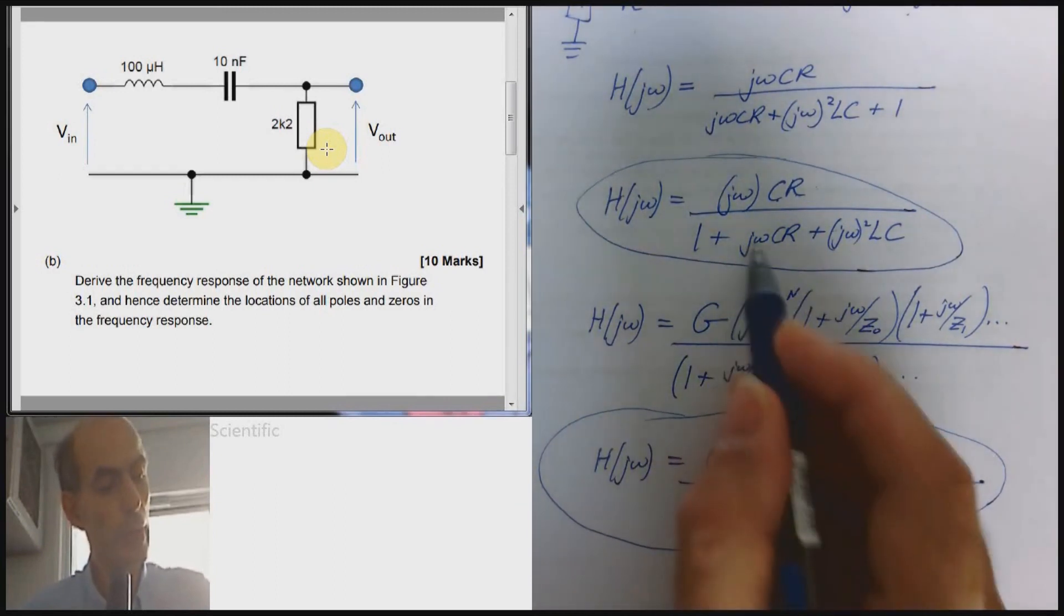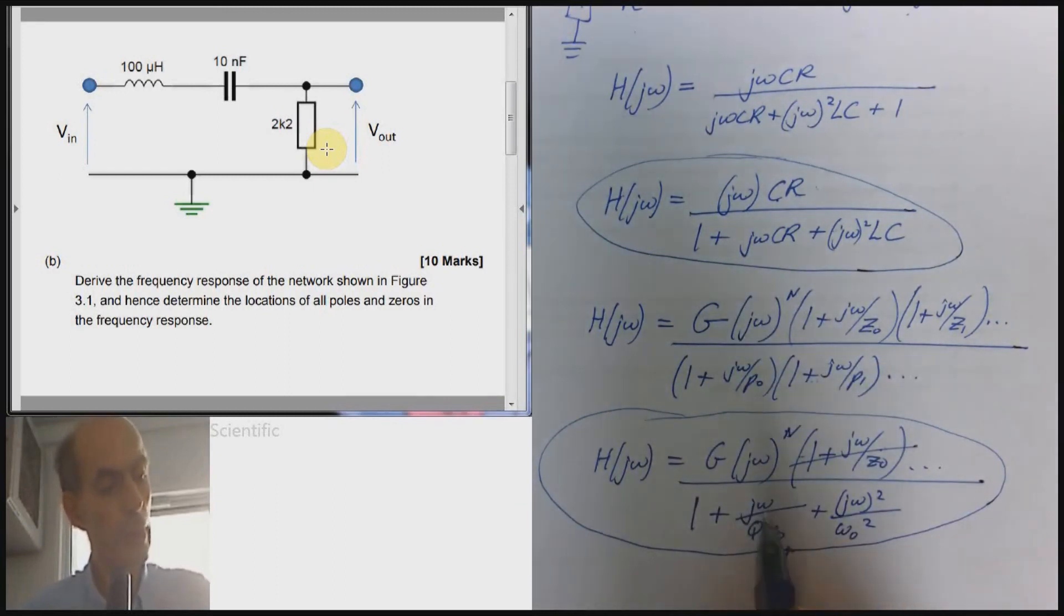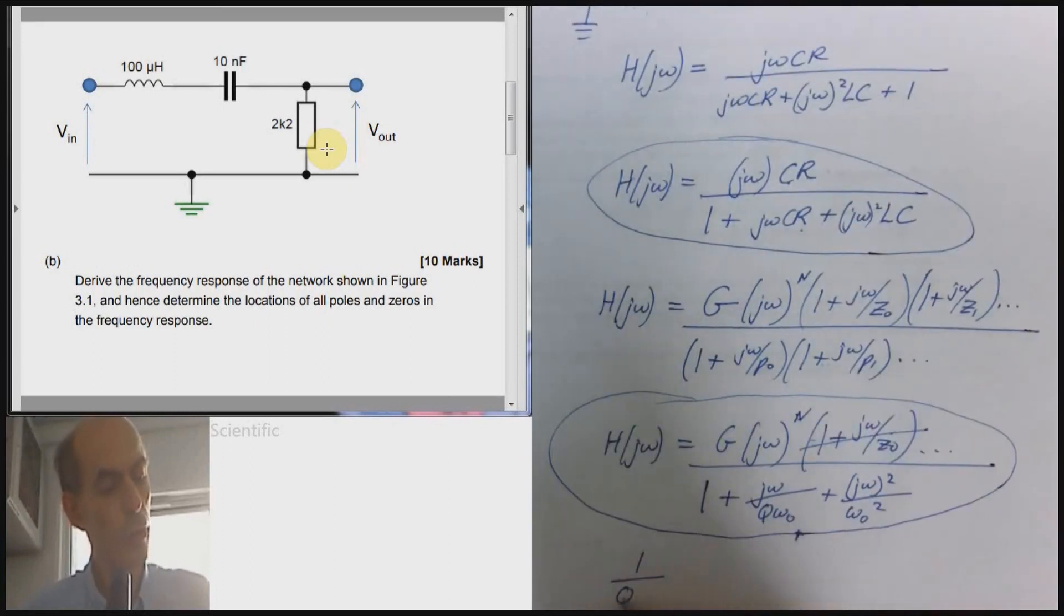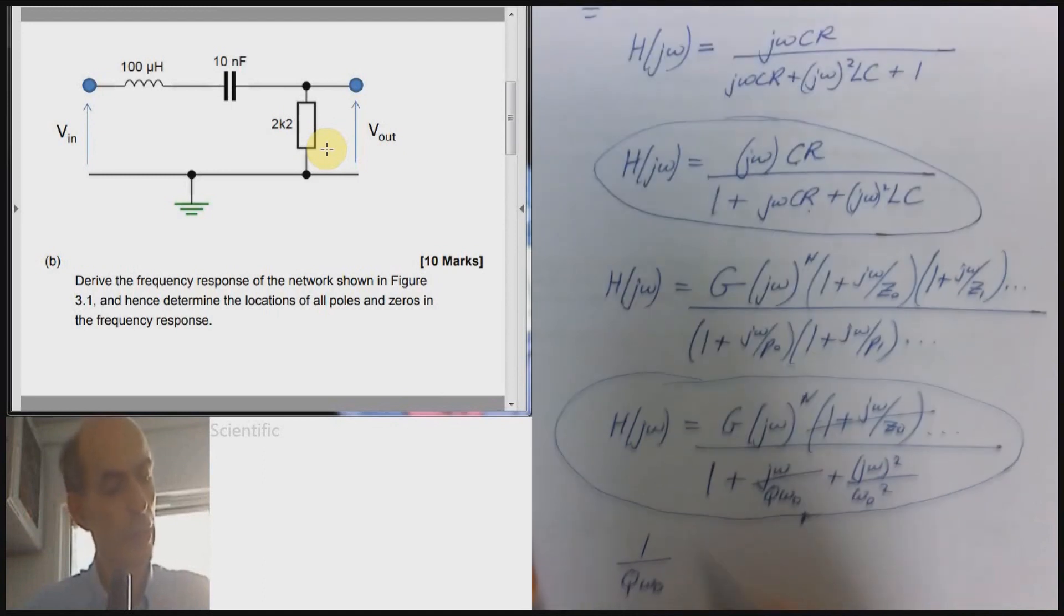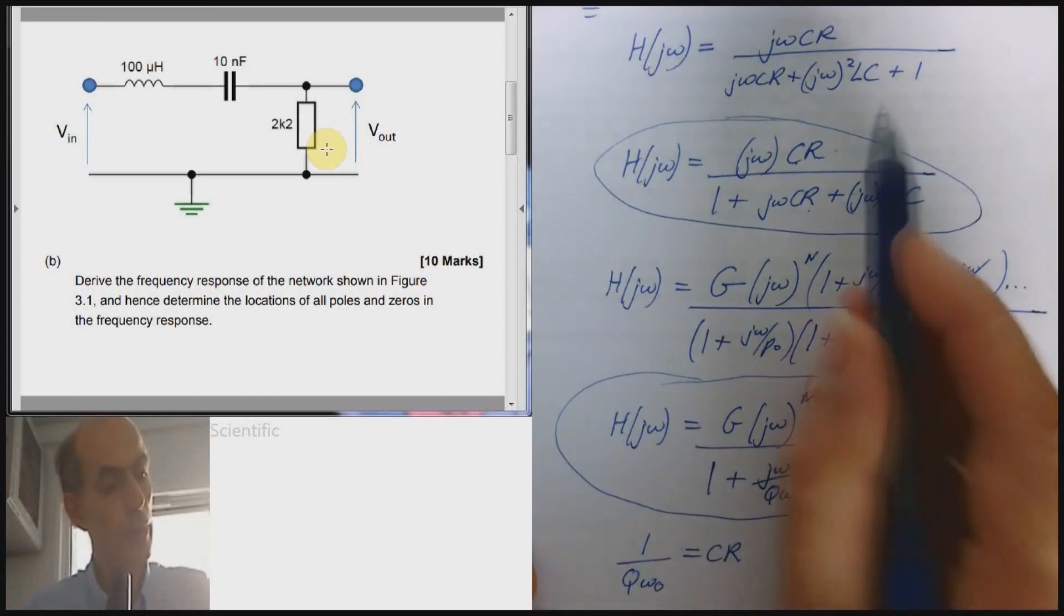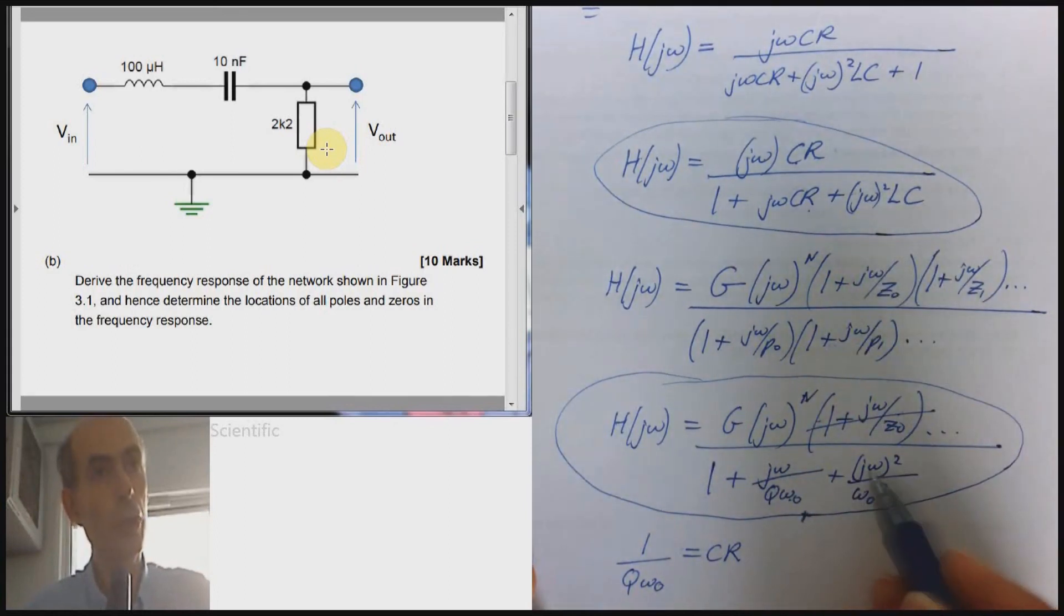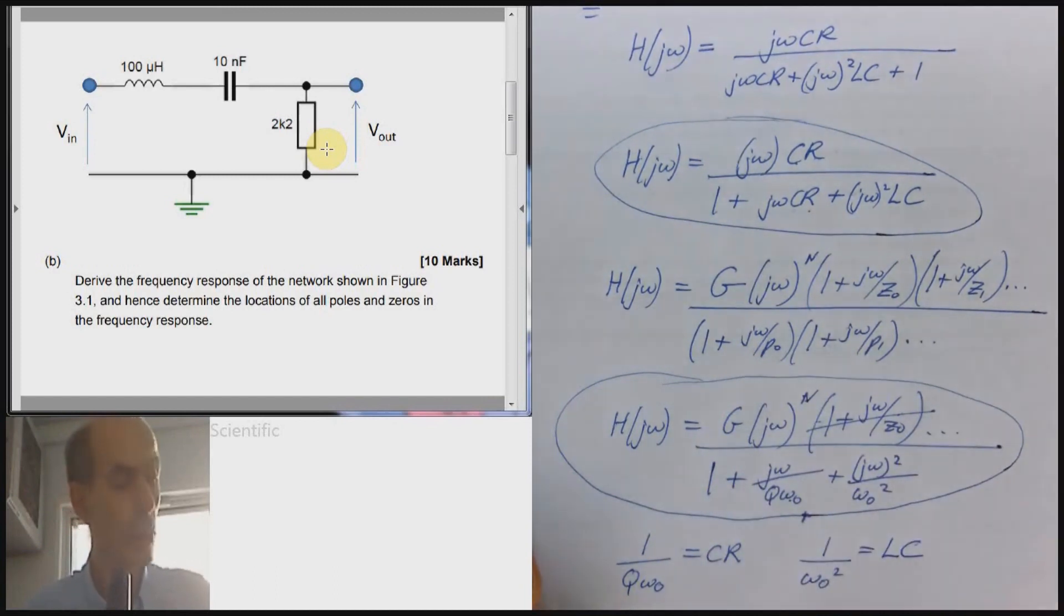On the bottom, we have 1 plus jω CR here. So that tells us that 1 over Qω_0 is CR. And here we have jω squared LC. The standard form is jω squared over ω_0 squared. So that tells us that 1 over ω_0 squared is LC. And we could work out what the resonant frequency and the Q factor are from these two terms.